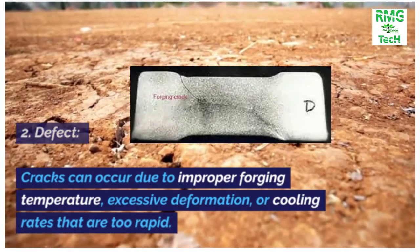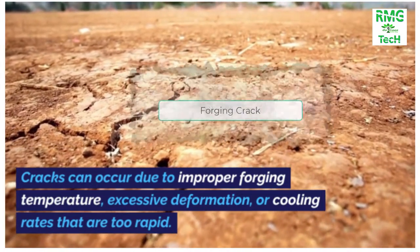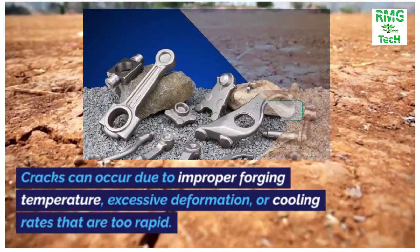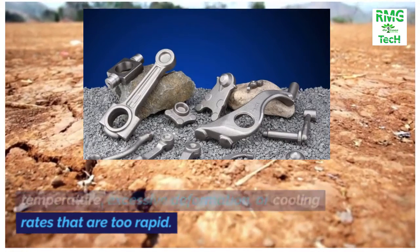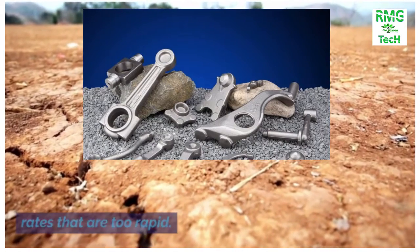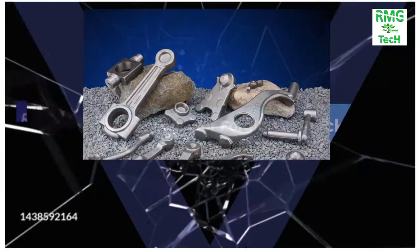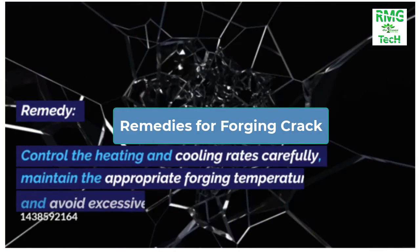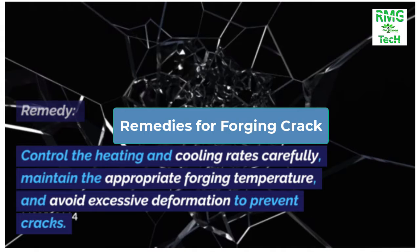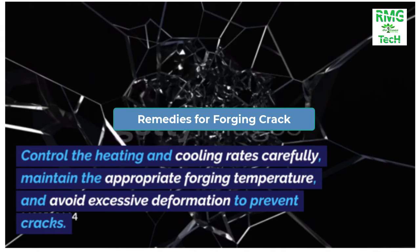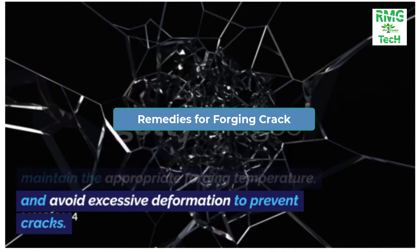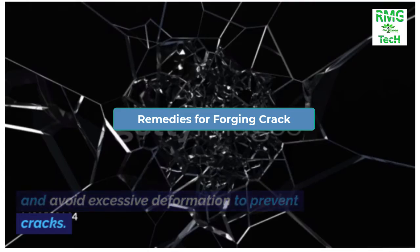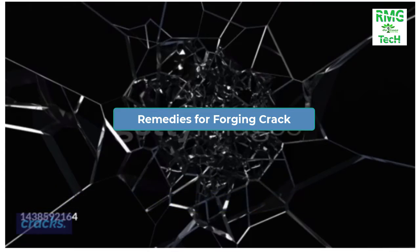Defect 2: Cracks can occur due to improper forging temperature, excessive deformation, or cooling rates that are too rapid. Remedy: Control the heating and cooling rates carefully, maintain the appropriate forging temperature, and avoid excessive deformation to prevent cracks.